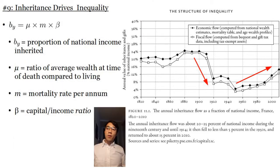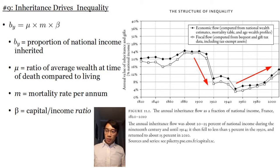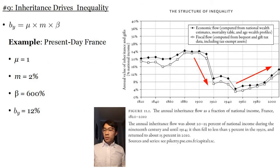Piketty advances the following mathematical equation to model this: b sub y equals mu times m times beta. b sub y is the proportion of national income inherited; mu is the ratio of average wealth at time of death compared to that of the living; m is the mortality rate in the country per annum; and beta is the capital income ratio. Using data from present-day France: mu equals 1, mortality rate equals about 2% per year, beta equals 600%, and therefore b sub y has a value of about 12%.